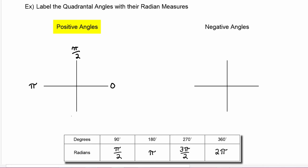270 degrees is 3π/2 radians, and 360 degrees is 2π radians.